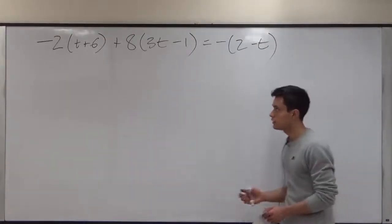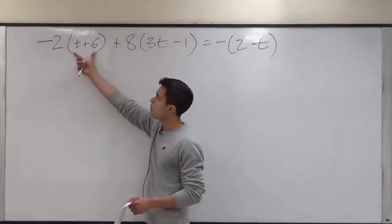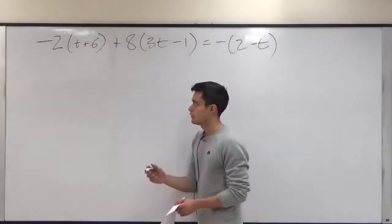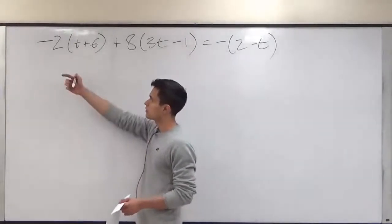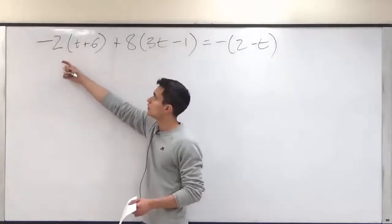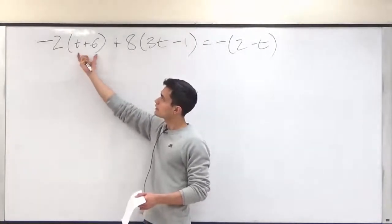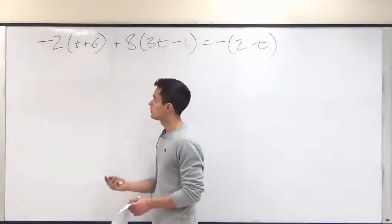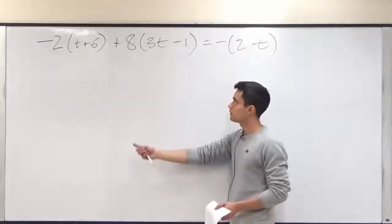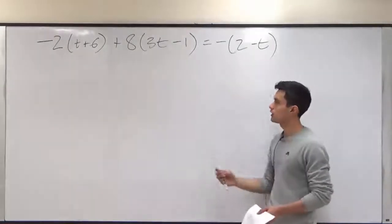In order to solve for t, we have to open up the parentheses. And in order to open up the parentheses, we have to multiply negative 2 by the components within these parentheses. And the same could be applied for this one and this one. So let's start with the first one.